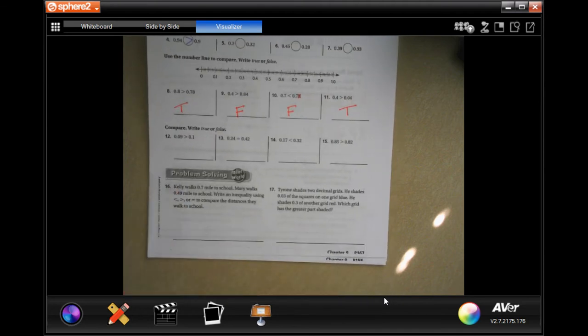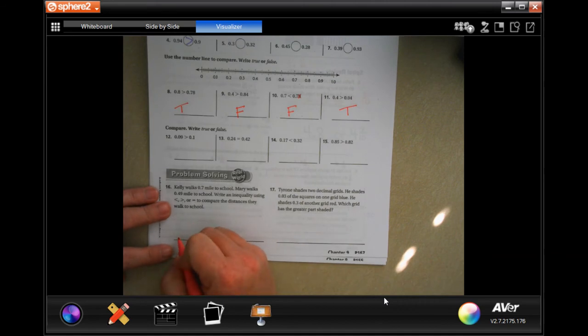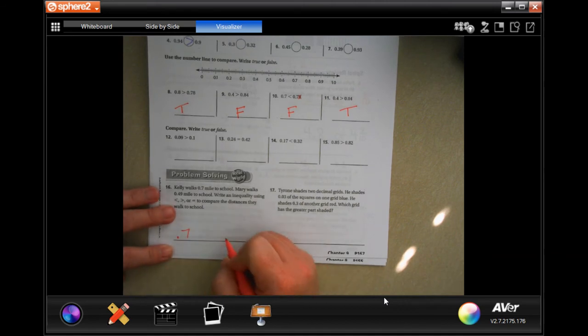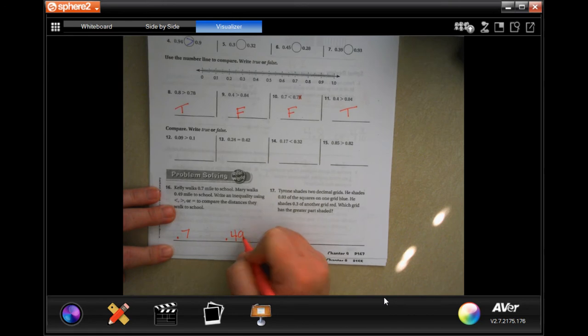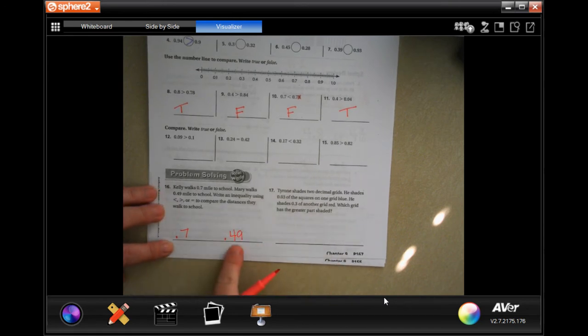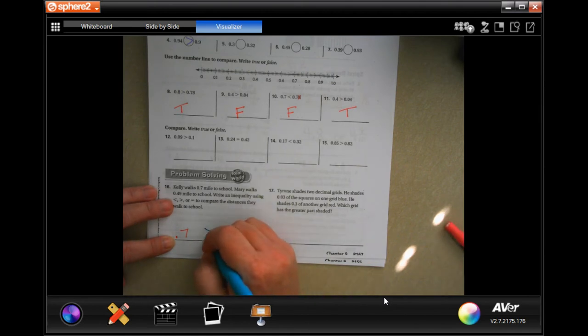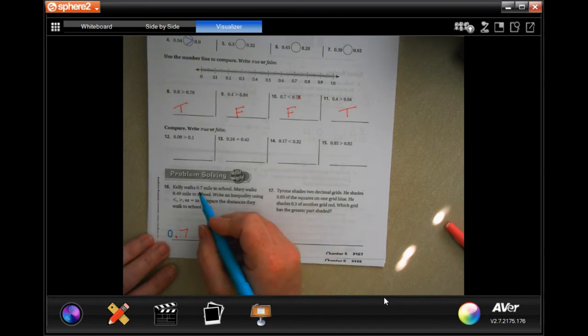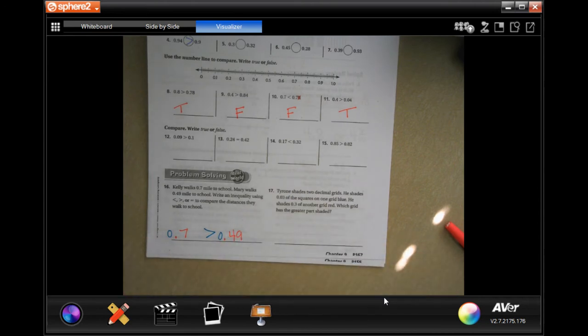Just pay attention to which way the sign is going, or if it says equal, make sure that they line up. Make sure that the same number. So, we're going to go down to number 16, where it says Kelly walks 0.7 miles. Mary walks 0.49 miles to school. Write an inequality using the greater than less than or equal sign, compare the distance they walk to school. So, we have a 0.7, and we have a 0.49. Well, 7 is bigger, so that's it. That's all you're doing, guys. You can put a 0 there like it does up there. It doesn't change anything.